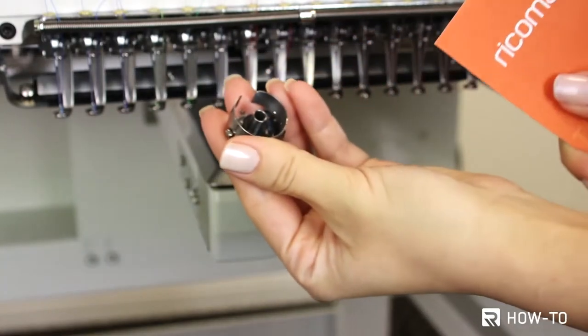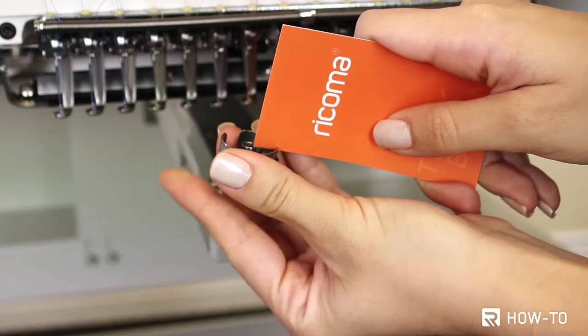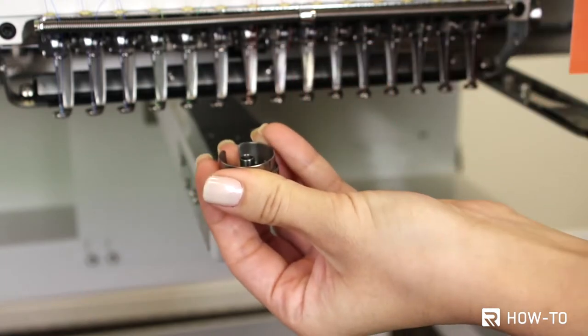Once a week, pass a business card or a piece of paper through the bobbin case slit to clean any lint buildup.